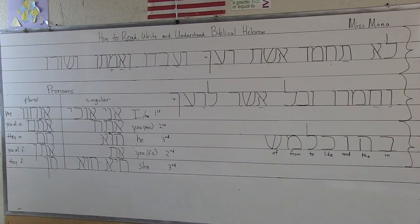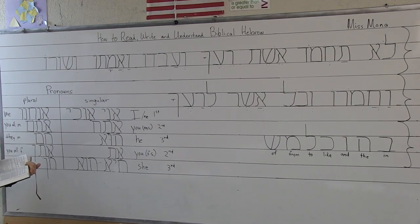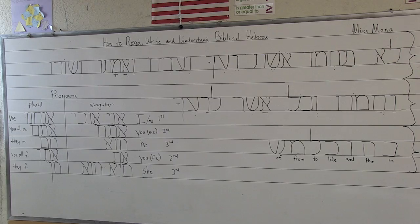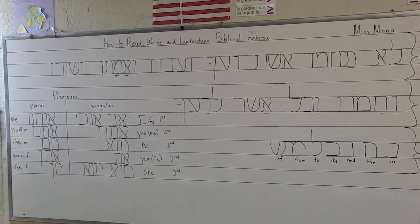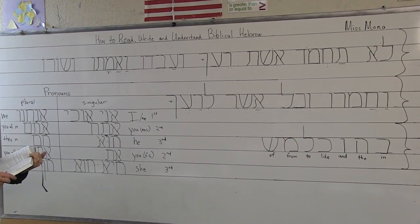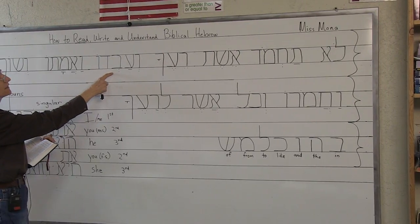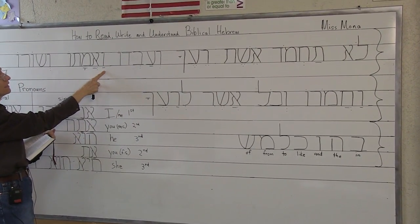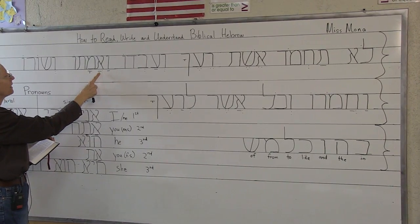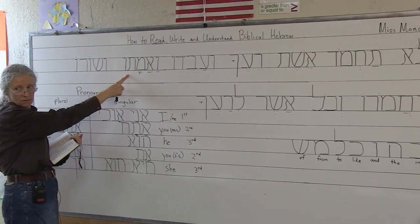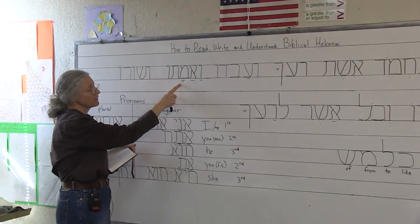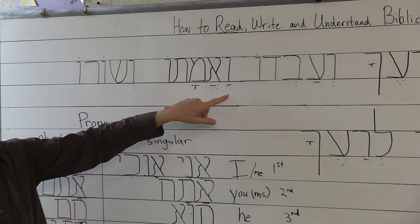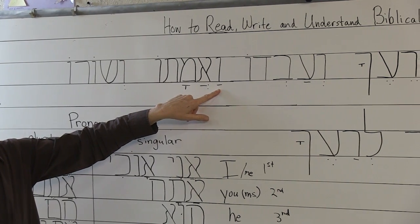So where that leaves off, I want you to write on your lined paper. You've got ve-av-do — you've got right up until there. So you're going to start writing on your lined paper: va-a-ma-to. Go ahead and write this. That's over here — that's the completion of that verse. Go ahead and write this.